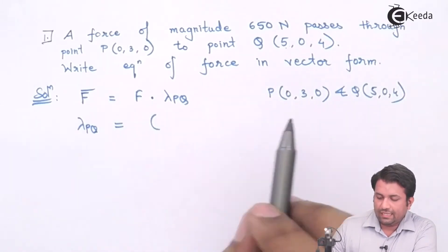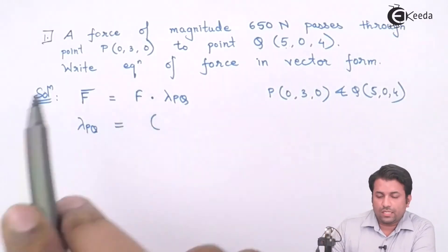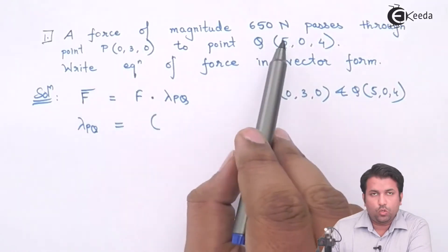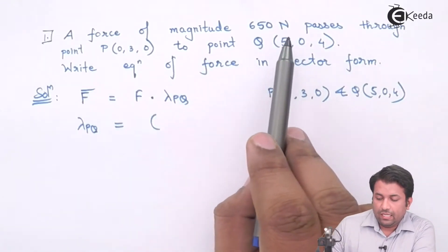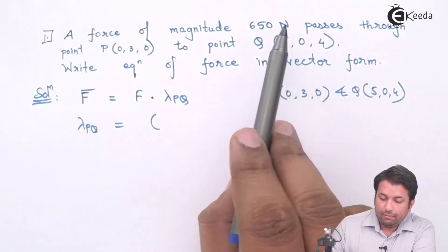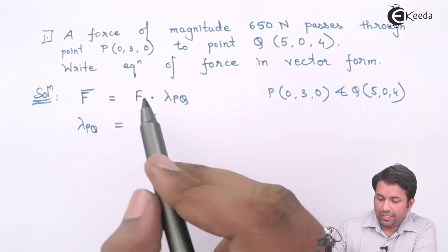In this case, as I said, if the force is approaching from P to Q, we have to subtract it like this point minus this point.